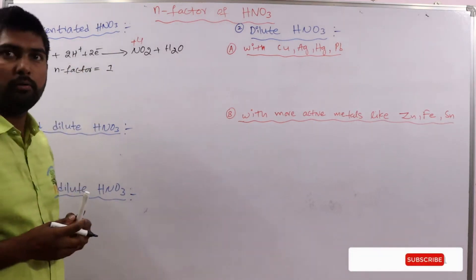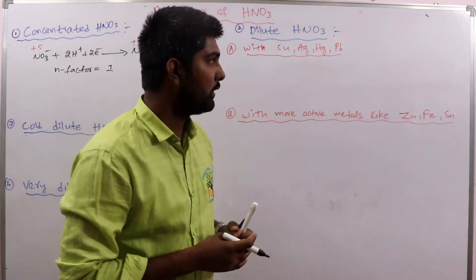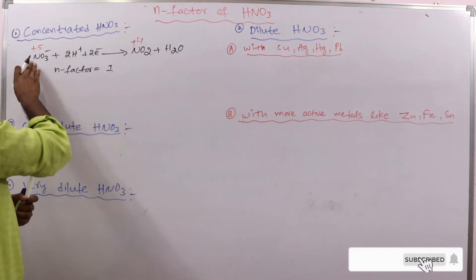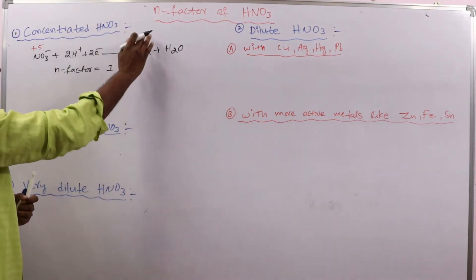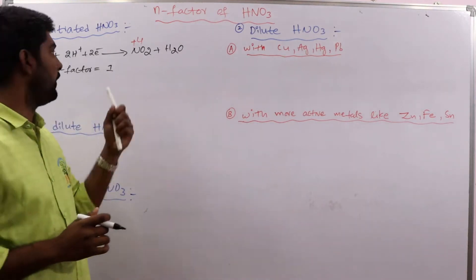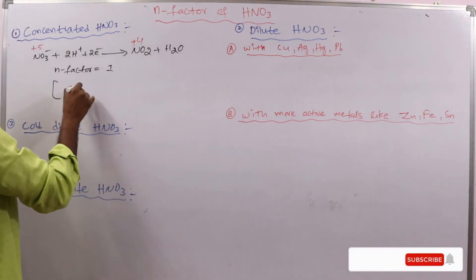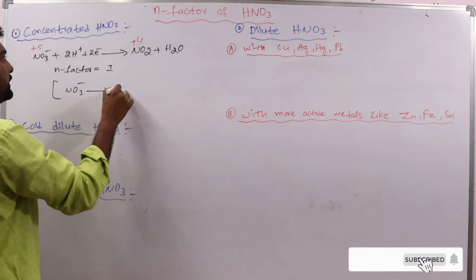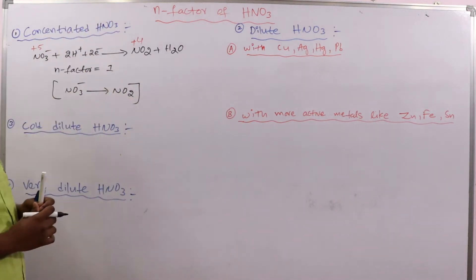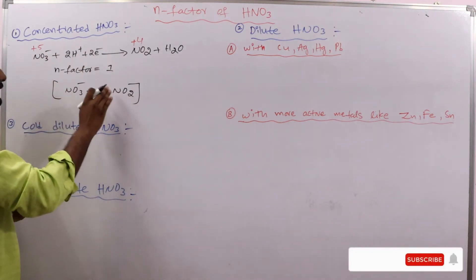The change in oxidation state per mole is from +5 to +4, which is 1 unit, so N-factor equals 1. Overall, for concentrated HNO3, NO3⁻ is converted to NO2. So at this concentration, NO3⁻ changes to NO2.